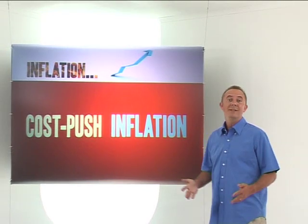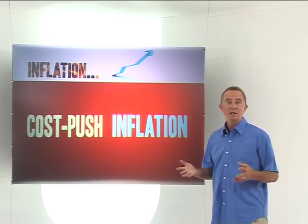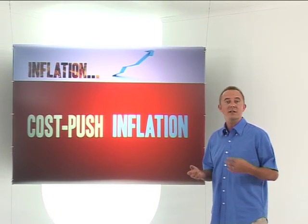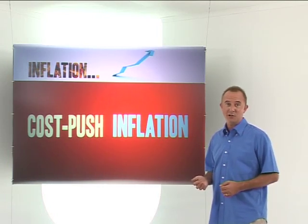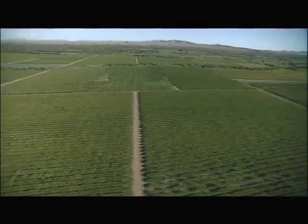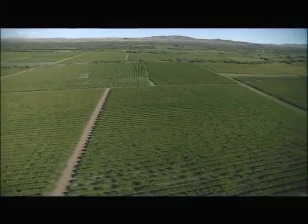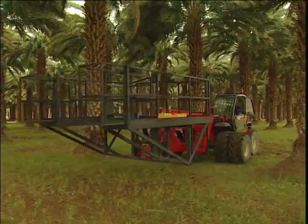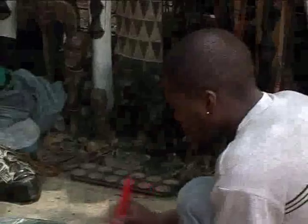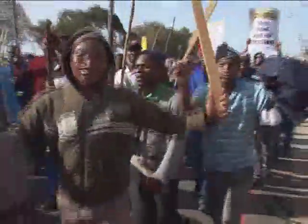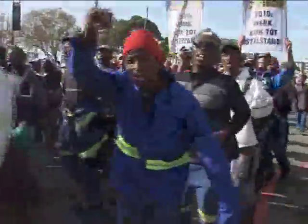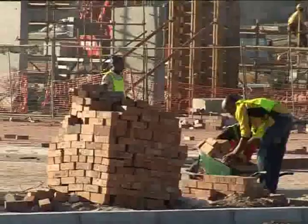As the name implies, cost push inflation occurs when there are sustained or continuous increases in any of the costs of production. Remember the four factors of production: land, labour, capital and entrepreneurship. These are factors that affect supply. For example, trade union pressure forces an increase in wages, which pushes up production costs.